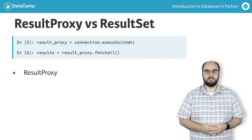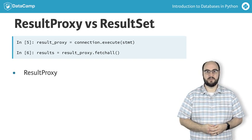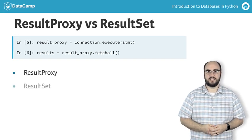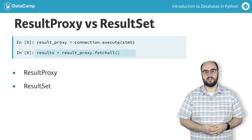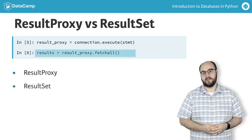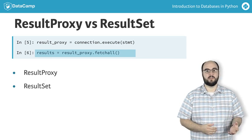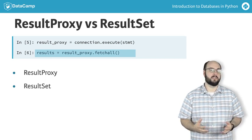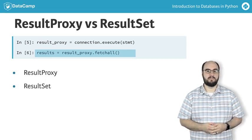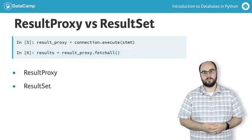When we use a fetch method, such as fetchAll on a resultProxy, we get a resultSet that contains the actual data we asked for in the query. This separation between the resultProxy and the resultSet allows us to fetch as much or as little data as we desire, and we'll explore this more in a later section.